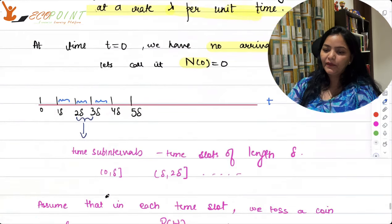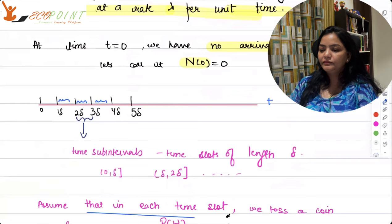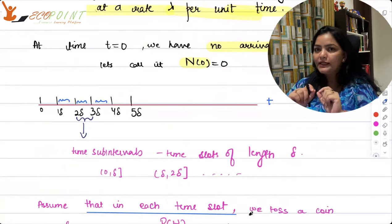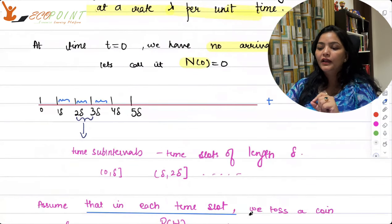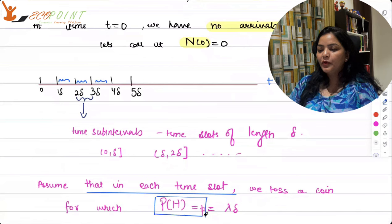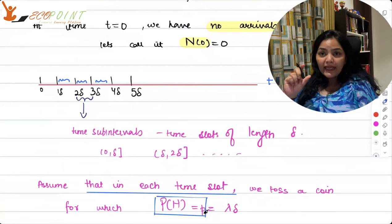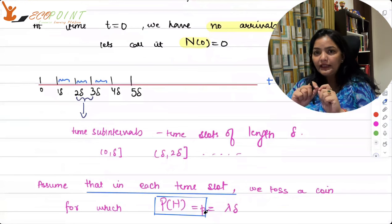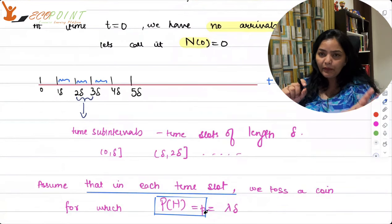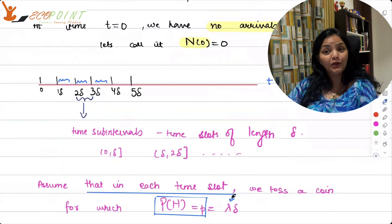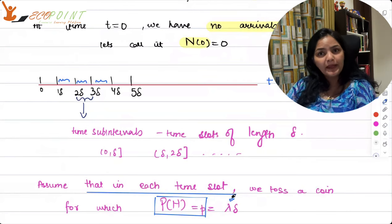Now assume that in each time slot, we toss a coin. We are taking tossing a coin experiment with a particular probability of heads. Let's say the probability of heads is p. In one time interval, which has length delta, probability of heads is p. You have rate of occurrence lambda. Heads is an event. Its rate is lambda.